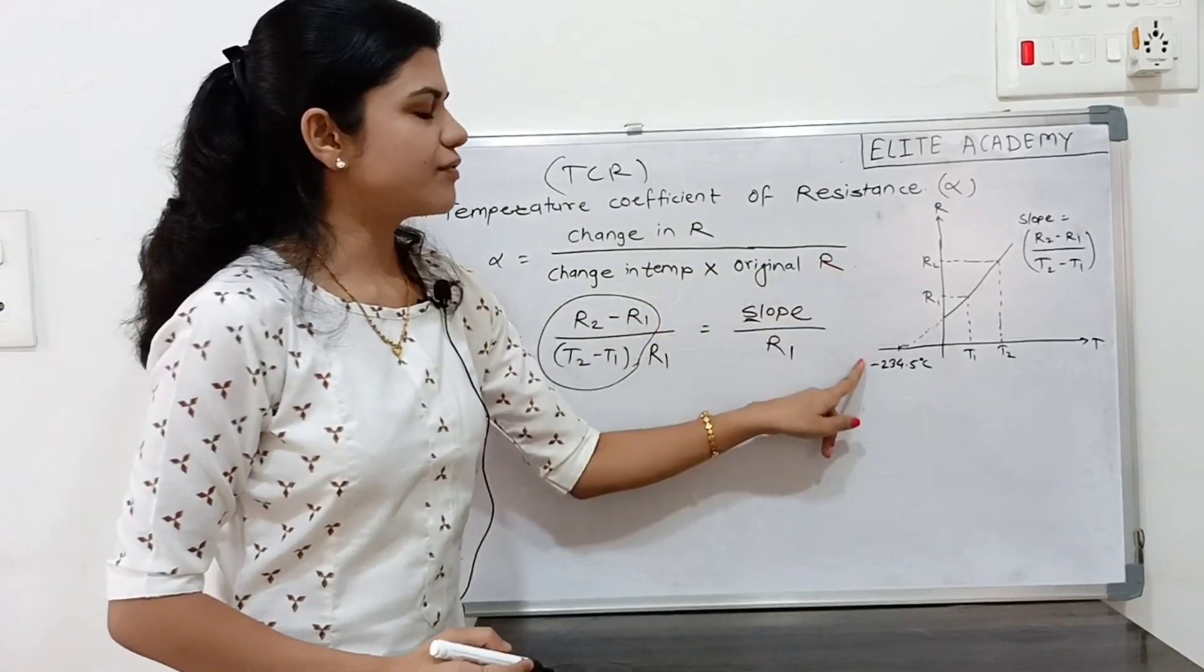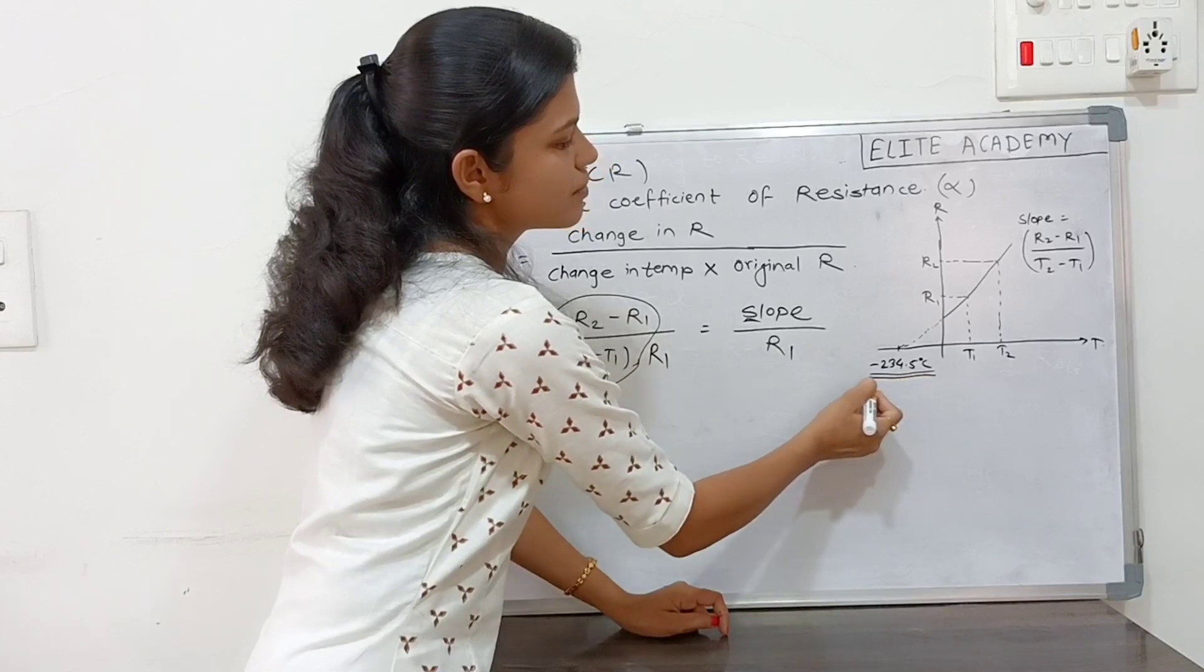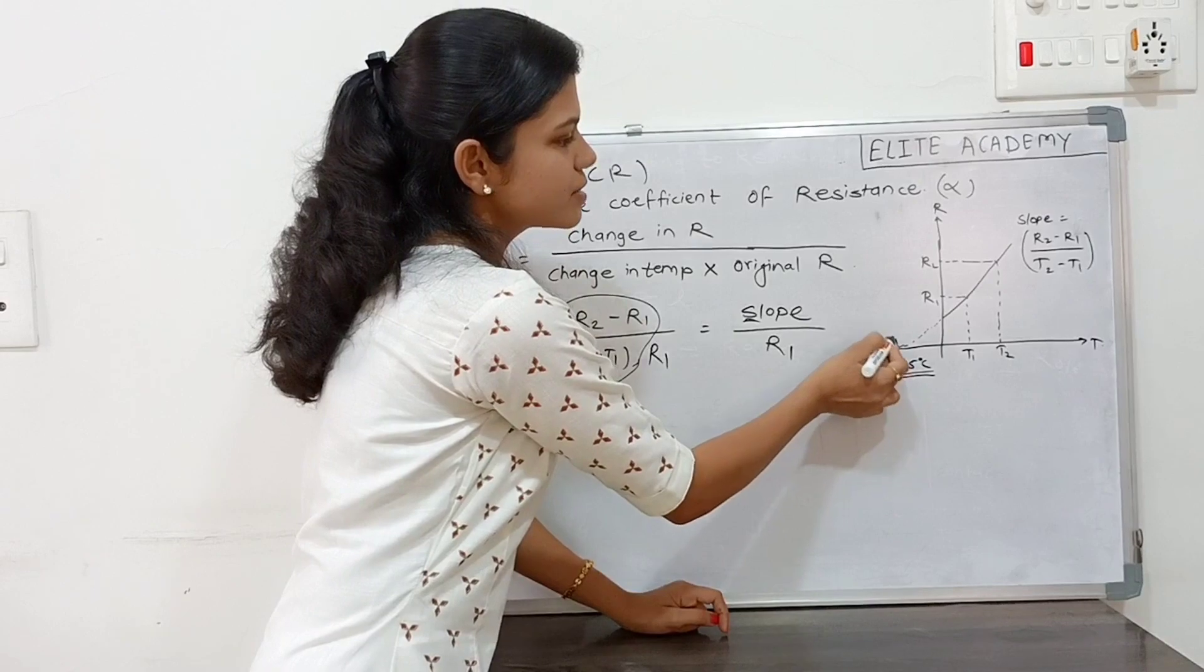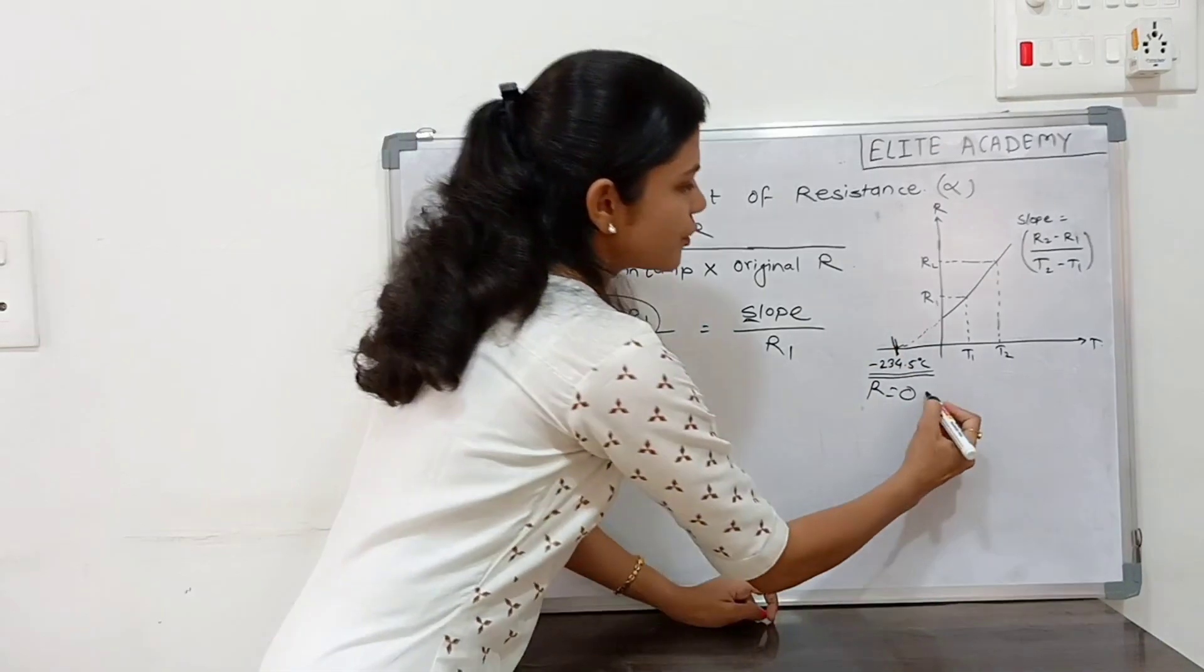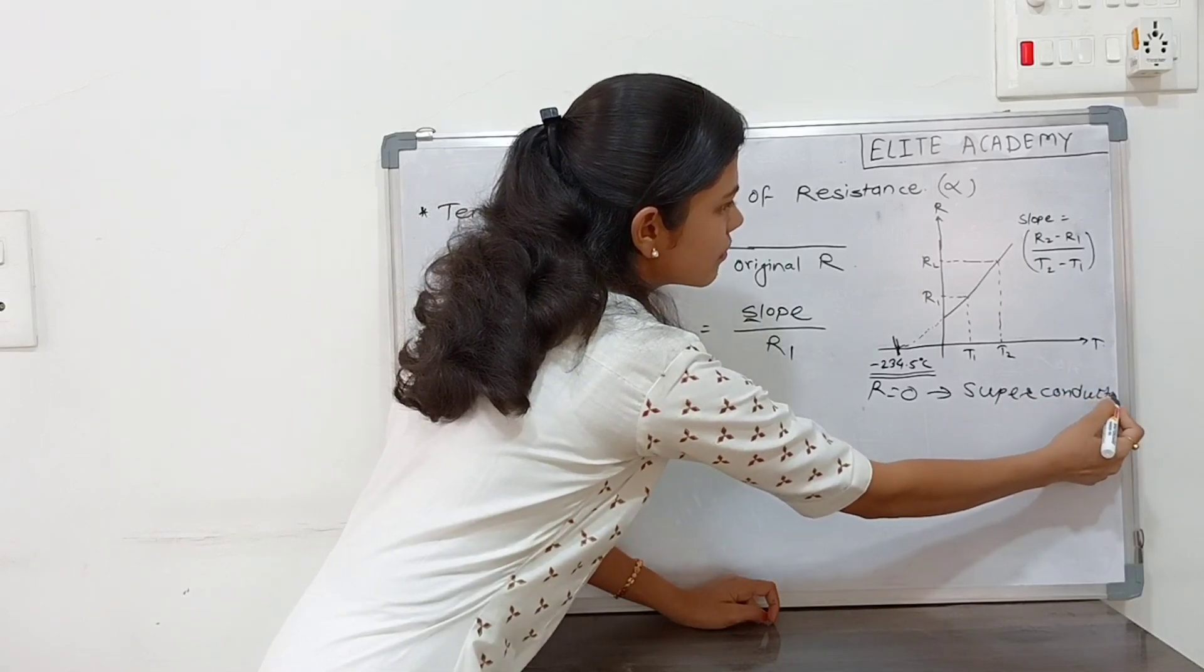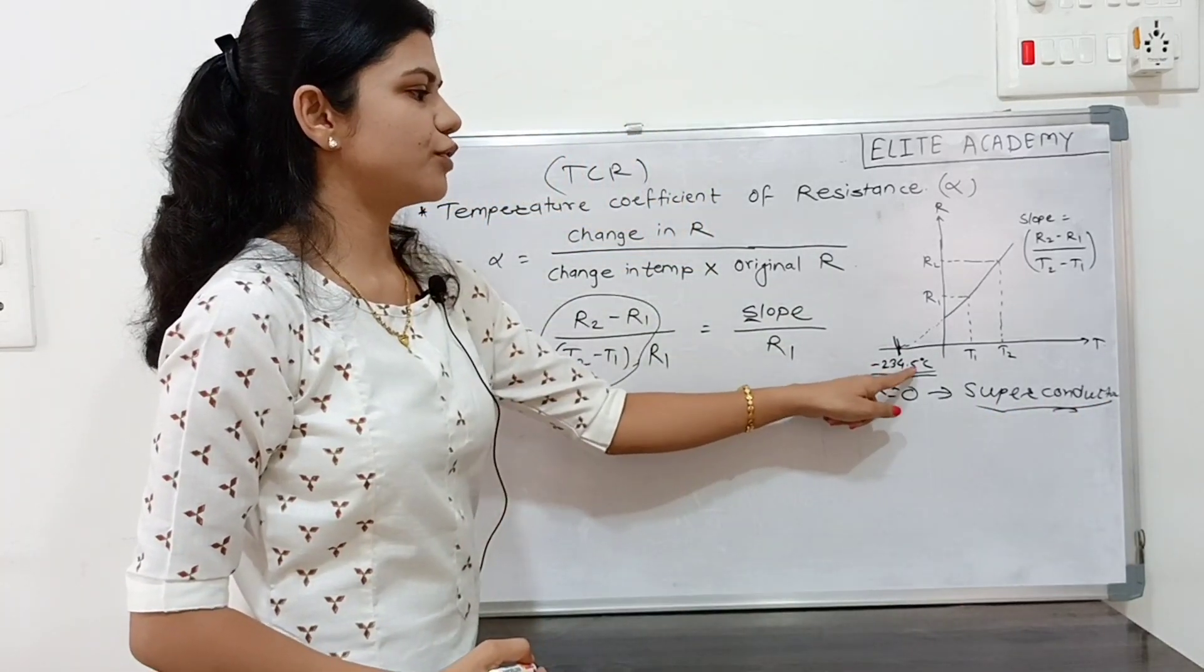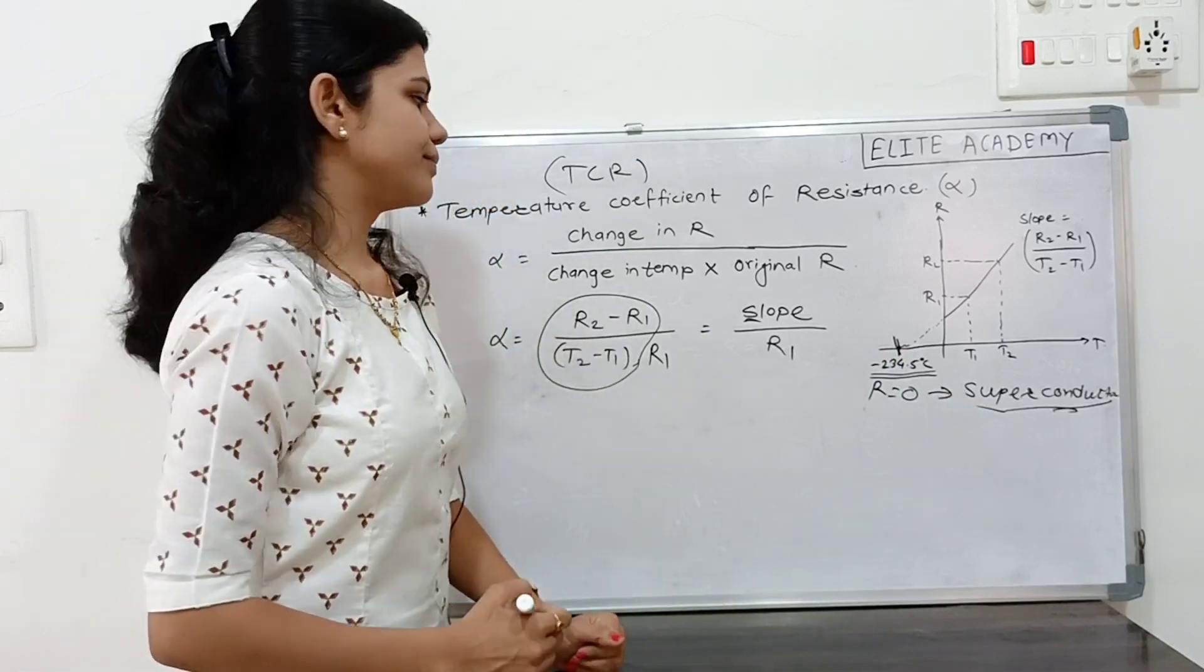From this graph we can say that here you can observe this is minus 234.5 degree Celsius temperature. At this temperature R is equal to 0 and this type of material is called as a superconductor. At R is equal to 0 the temperature is at minus 234.5 degree Celsius and this is called as a superconductor.